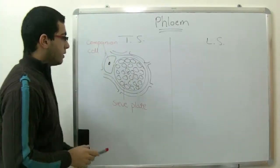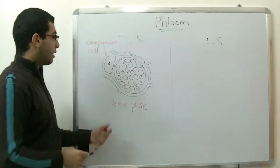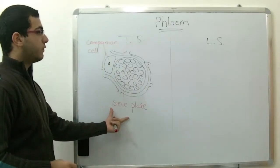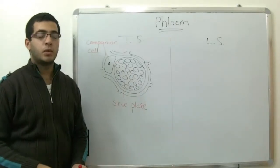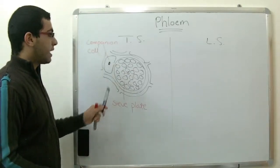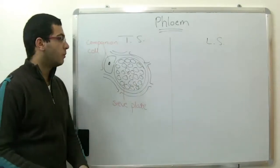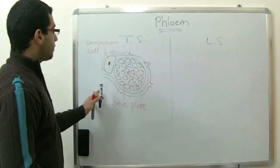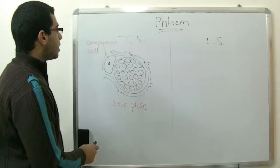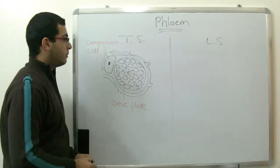These companion cells have a nucleus because the sieve plate or sieve tube cells do not contain a nucleus. So this nucleus carries out the function of the nucleus in the cells of the phloem tissues. This is the transversal section of the phloem tissue.